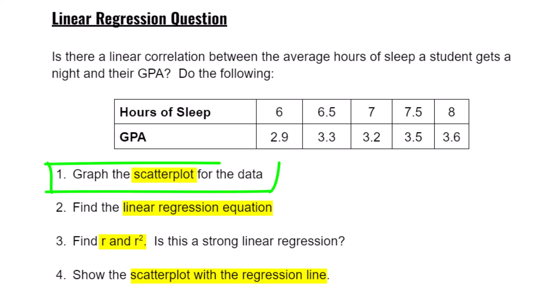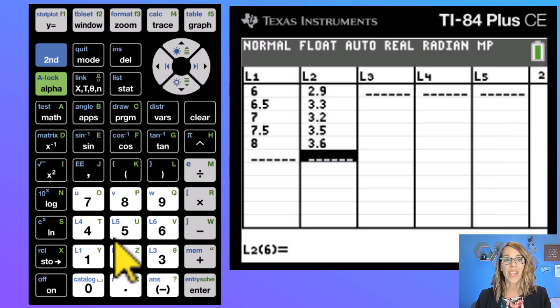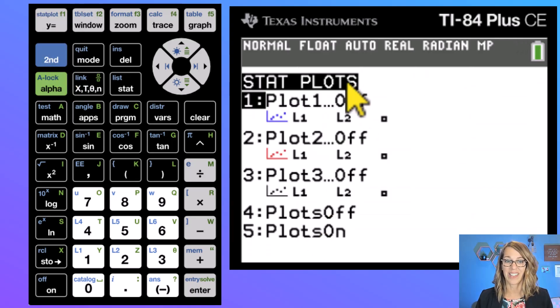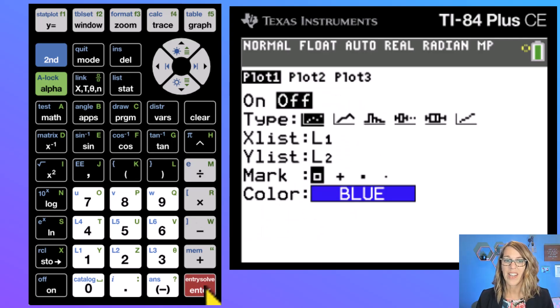The very first thing on that list was to show the scatter plot. To do that we want to go into stat plot which you see right up here on y equals. So I'm going to go second, stat plot, and I've got all of these set to off. Let's set that first one to on. I want to hit enter and navigate over so I'm hovering on on and then hit enter.